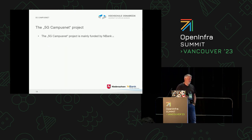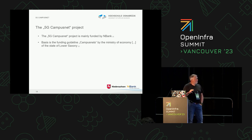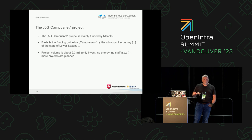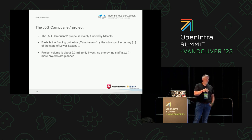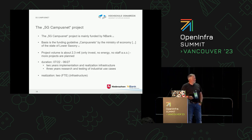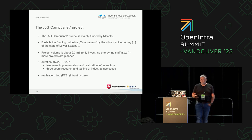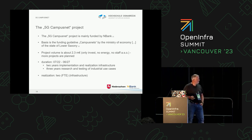The 5G CampusNet project is mainly publicly funded by the N-Bank — the state of Lower Saxony, where we live and work. There's a funding guideline called CampusNet; the Ministry of Economy is behind it and distributes money through the N-Bank. The volume is about 2.3 million euros — investment only: no personnel, no staff, no energy costs. The duration is five years; we started last year. We have two years for implementation and realization of the infrastructure, and then three more years for testing defined industrial use cases. For the infrastructure realization, we are essentially two people with a little help from outside.